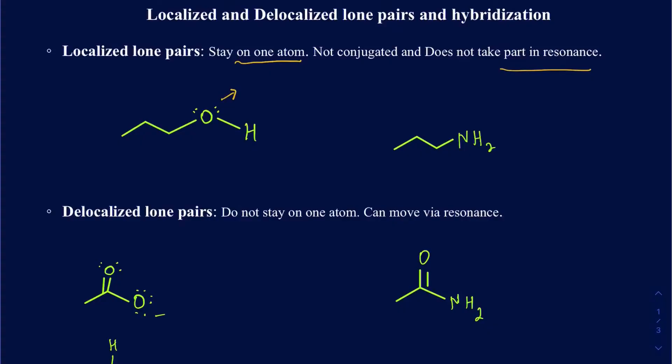In this particular case, since oxygen is going to have four electron domains around it, including those two lone pairs, it's still going to be sp3. And at the end of the day, since you have two lone pairs there, it's going to be bent in structure.